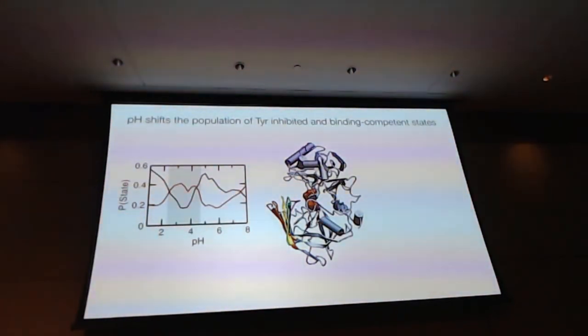So as a summary, what we learned? We learned that the flap moves in a pH-dependent manner. In the intermediate pH, the binding competent state is largely populated, and conversely, the closed state, the inhibitor state, is least populated. So that's BACE1.